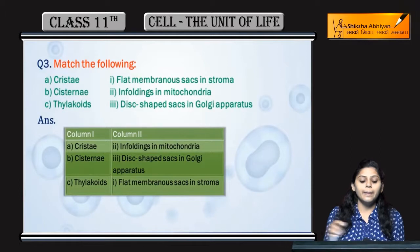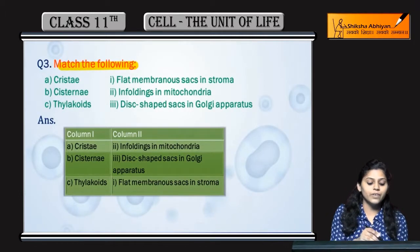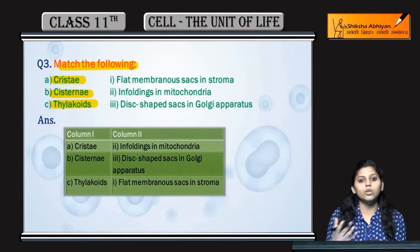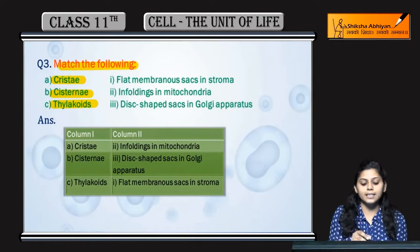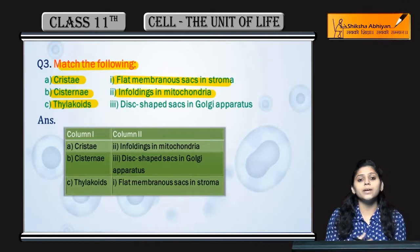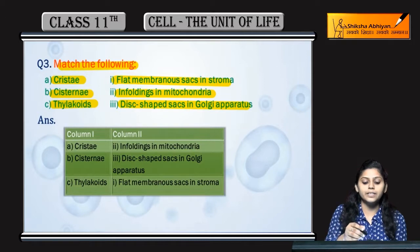Question number 3: Match the following. Hamei column 1 ko column 2 se match karna hai. Column 1 mein diya hai: criste, cisternae, thylakoids. Hamei batana hai column 2 mein se ye kis se link karta hai. Flat membranous sacs in stroma kaun hai? Infoldings in mitochondria kya kis se kehte the hai? Disc shaped sacs in Golgi apparatus kis se related hai?